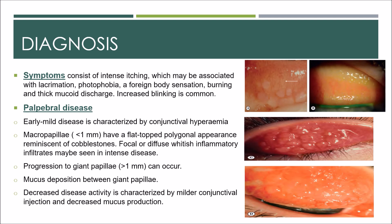Increased blinking is also very common. In palpebral disease, early to mild disease is characterized by conjunctival hyperemia and a diffuse velvety papillary hypertrophy on the superior tarsal plate. Macropapillae, which are less than 1 mm, have a flat-topped polygonal appearance reminiscent of cobblestones, seen focally or diffusely on the upper tarsal conjunctiva.